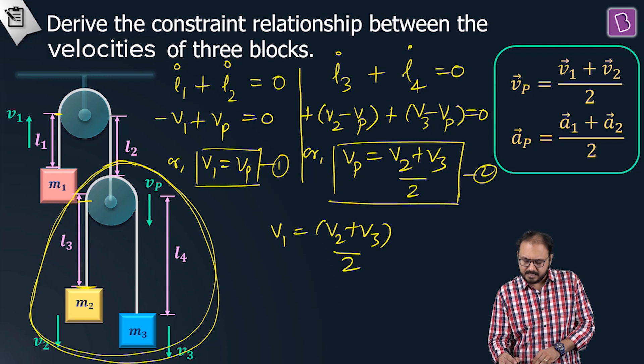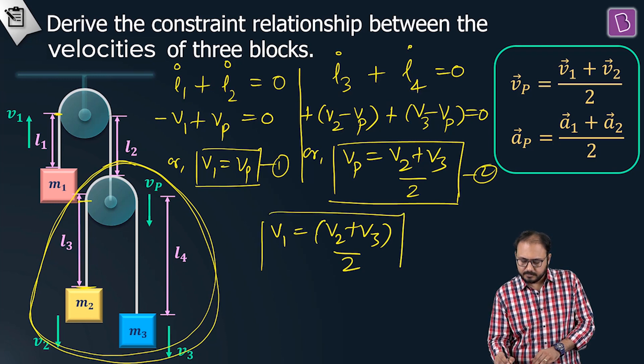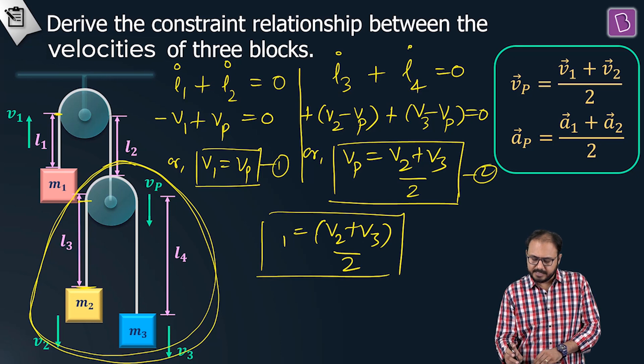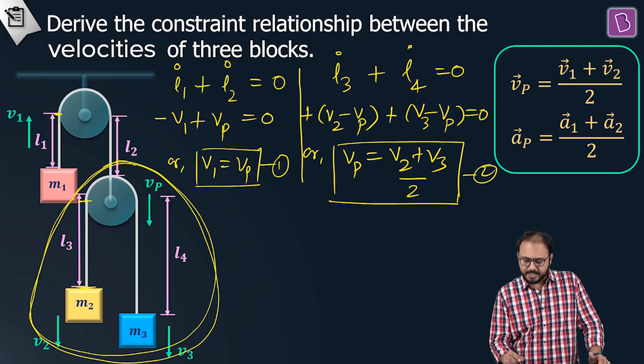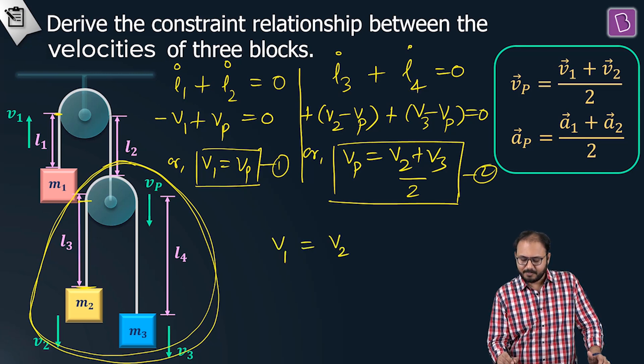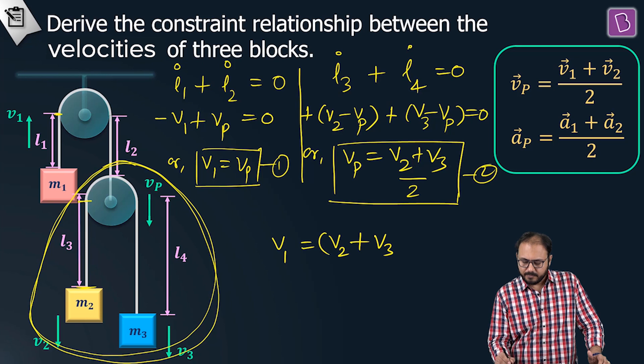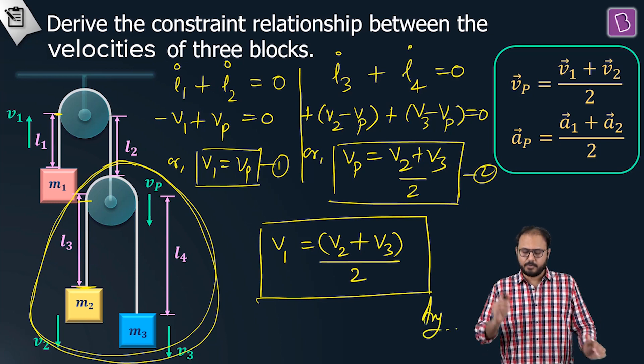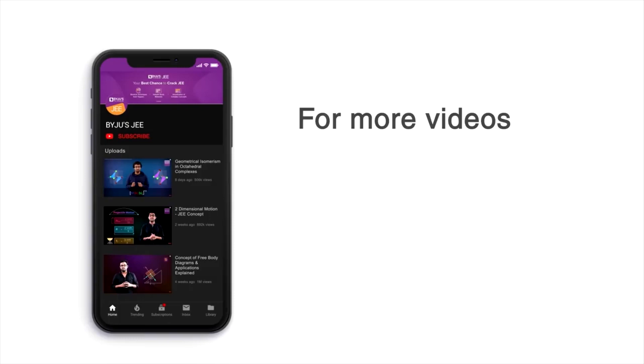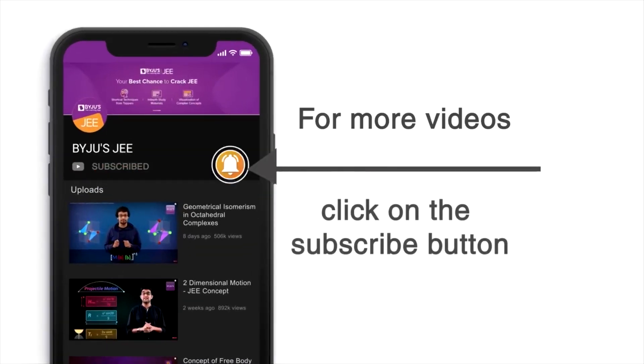Let me write it properly, nicely. Remember childhood? Neatness used to have marks. v1 equals v2 plus v3 by 2. There you go. For more videos and live lectures, click on the subscribe button now.